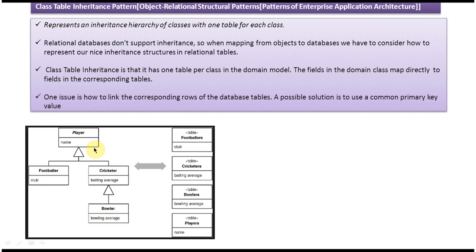Footballer and Cricketer will inherit the name property from Player. So Footballer will have name plus club, Cricketer will have name plus batting average, and Bowler will inherit Cricketer's properties, giving it name, batting average, and bowling average. This forms a single inheritance hierarchy.